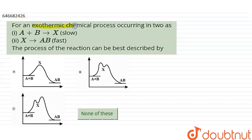for an exothermic chemical process occurring in two steps: (i) A + B → X (slow) and (ii) X → AB (fast). The process of the reaction can be best described by which of the following graph. So we need to find the graph for this.